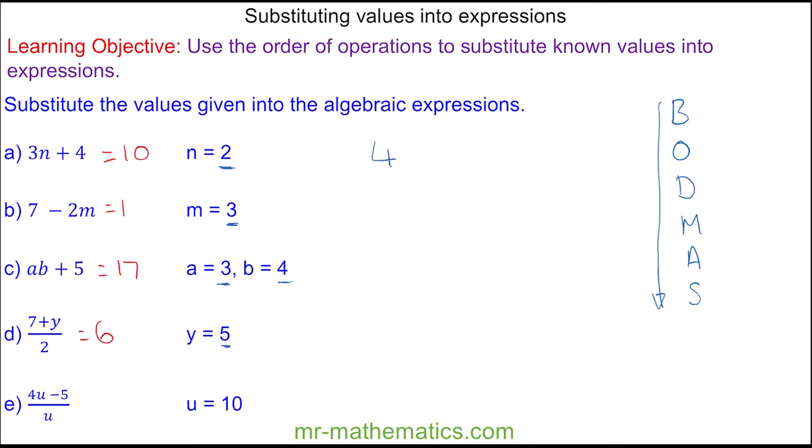Finally, for question e, we have 4u, and u is 10, so 4 multiplied by 10, take away 5, all over u, which again is 10. We'll do the multiplication first: 4 times 10 is 40. 40 take away 5 divided by 10. The numerator is 35 divided by 10, which works out as 3.5.